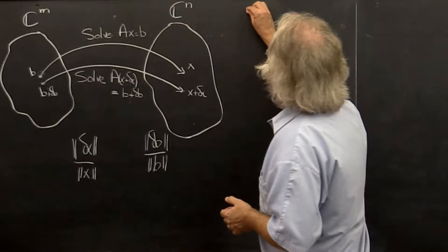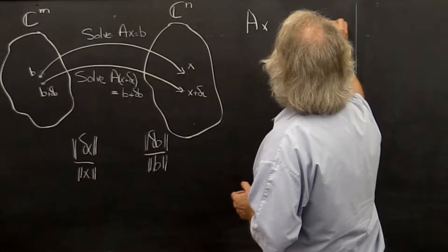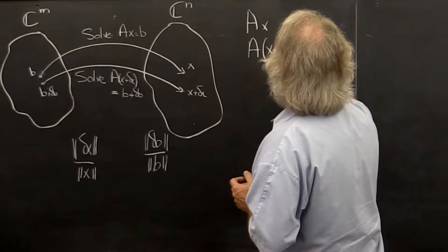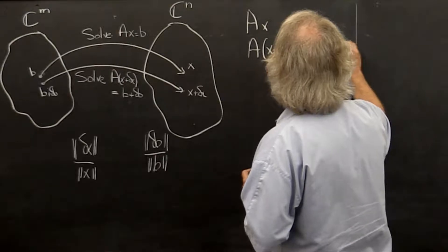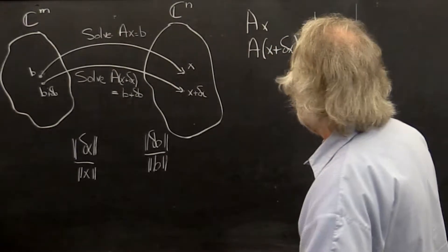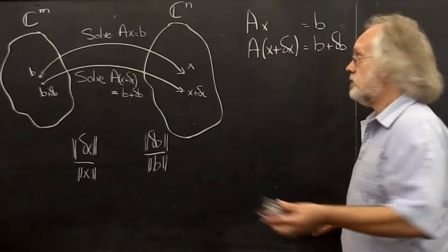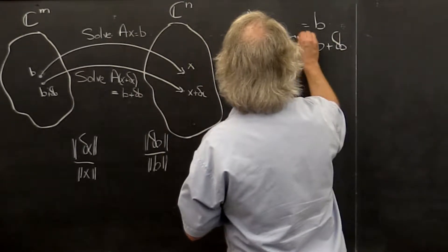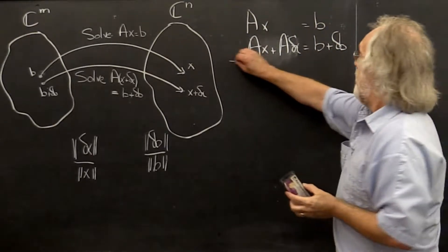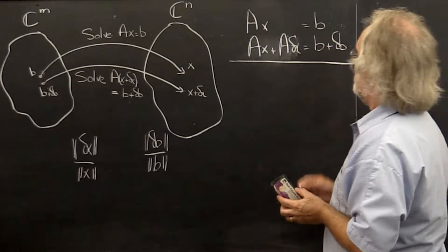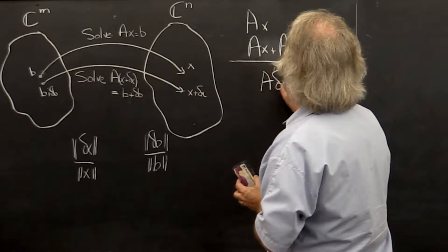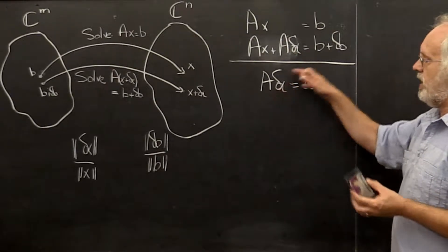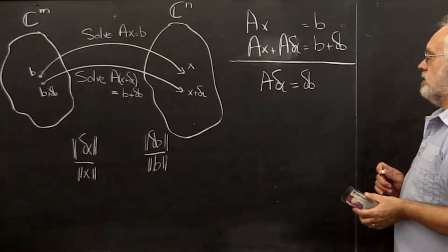Now what do we know? We know that A times x is equal to B, and we also know that A times x plus delta x is equal to B plus delta B. We know that matrix vector multiplication distributes, so we can replace this by A times x plus A times delta x. Then we can take the first equation, subtract it from the second equation and say that leaves us with A times delta x is equal to delta B. So there's this nice relationship between the error that was introduced and the error in the solution.